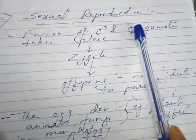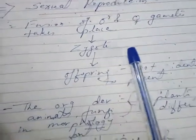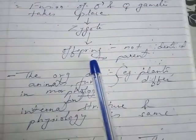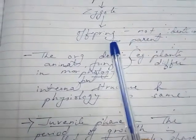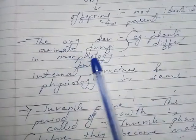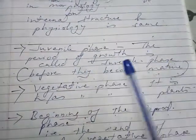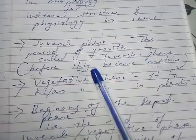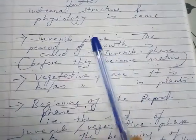In sexual reproduction, fusion of male and female gametes takes place and a zygote is formed. From the zygote, offspring are formed, and these are not identical to the parent as in asexual reproduction. Organisms such as plants, animals, and fungi differ in morphology but their internal structure and physiology remain the same. The juvenile phase is the period of growth before an organism becomes mature.